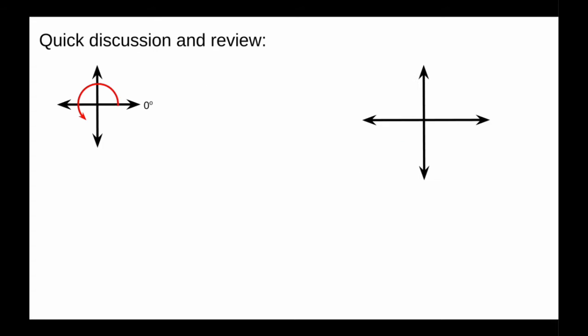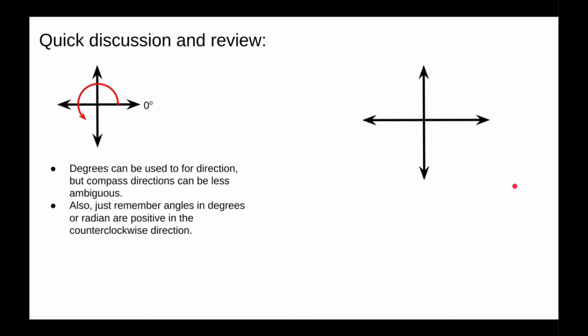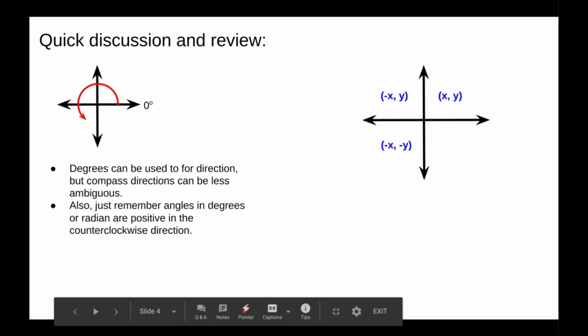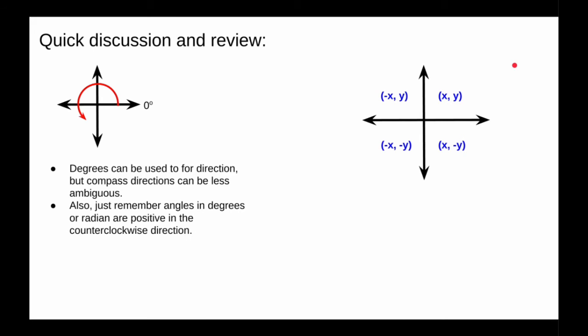We could use the angle directly, counterclockwise, like your physics teachers taught. But if you know the coordinate plane where x and y in the first quadrant are positive, in the second quadrant negative x and y positive, and in the third both are negative, and in the fourth quadrant x is positive and y is negative,